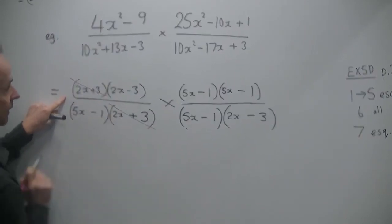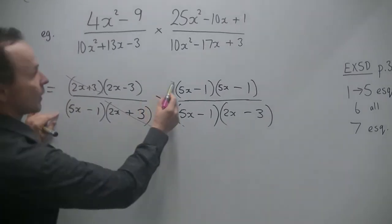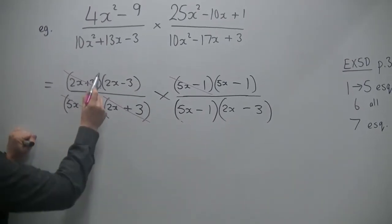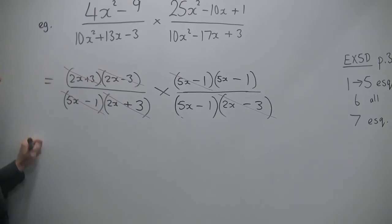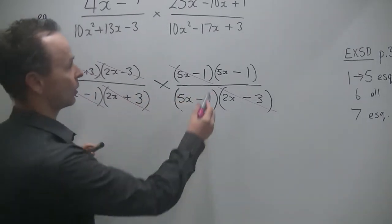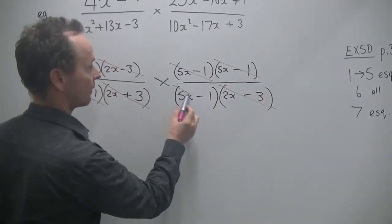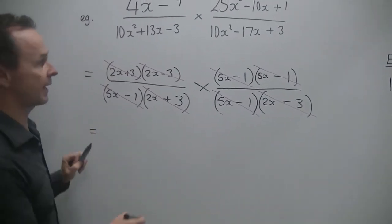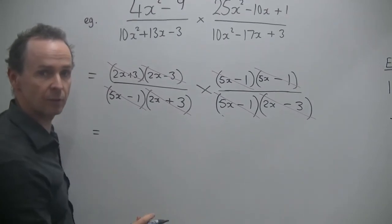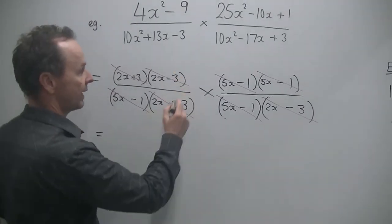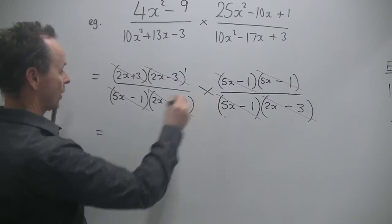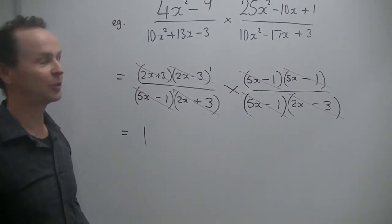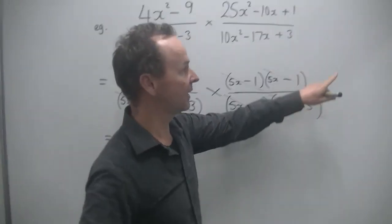So 2x plus 3, 2x plus 3. 5x minus 1 and 5x minus 1. 2x minus 3 with 2x minus 3. So what have we got left? Whoa! 5x minus 1 over 5x minus 1. And everything's gone. But don't make a mistake. Some people say nothing's left and write 0. That is incorrect. When you cancel stuff, you're left with 1 all the time. So it's 1 over 1. So the answer is just 1. Good job, everyone. Hopefully you understood that.